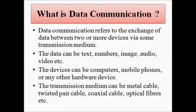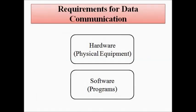From this definition we understand that data communication requires two important things: first, the hardware — the physical equipment like the computer, phone, printer, scanner; and second, the collection or group of information, the data — the software part. Both hardware and software are necessary for data communication to take place.